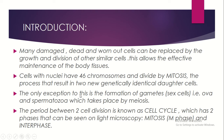The only exception to this is the formation of gametes — the sex cells, that is the ova and spermatozoa — which takes place by meiosis. All cells in the body divide by mitosis except the sex cells: ova in females and spermatozoa in males, which divide only by meiosis. This is the main difference between mitosis and meiosis.